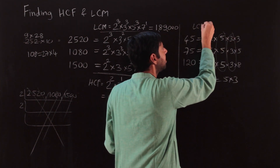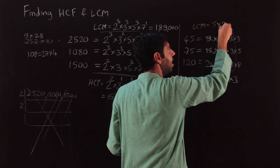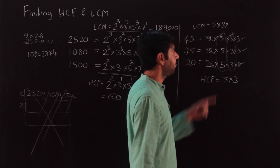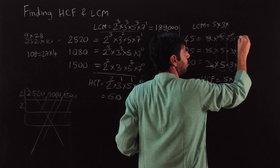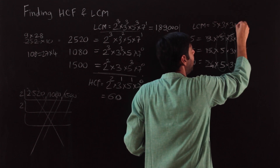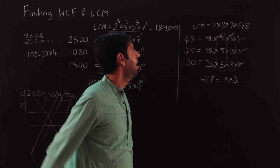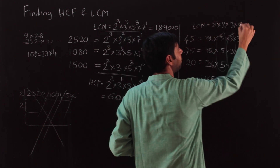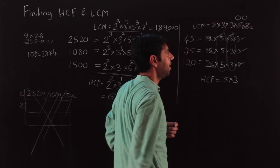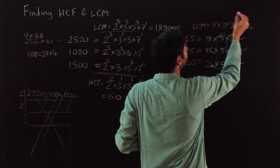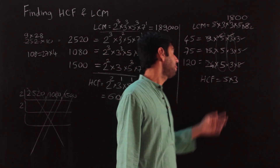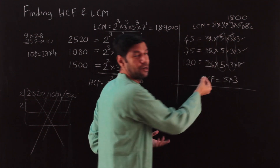For the LCM, take the common part once and all unique parts as well. We have primes 3, 5, and 8. None of 3, 5, and 8 are common to each other (8=2³). So LCM = 3×5×8×5 — wait, taking all unique factors: 3², 5², and 8. Calculate: 5×5=25, 25×4=100 with a factor of 2 remaining; 9×2=18; so LCM = 1800.